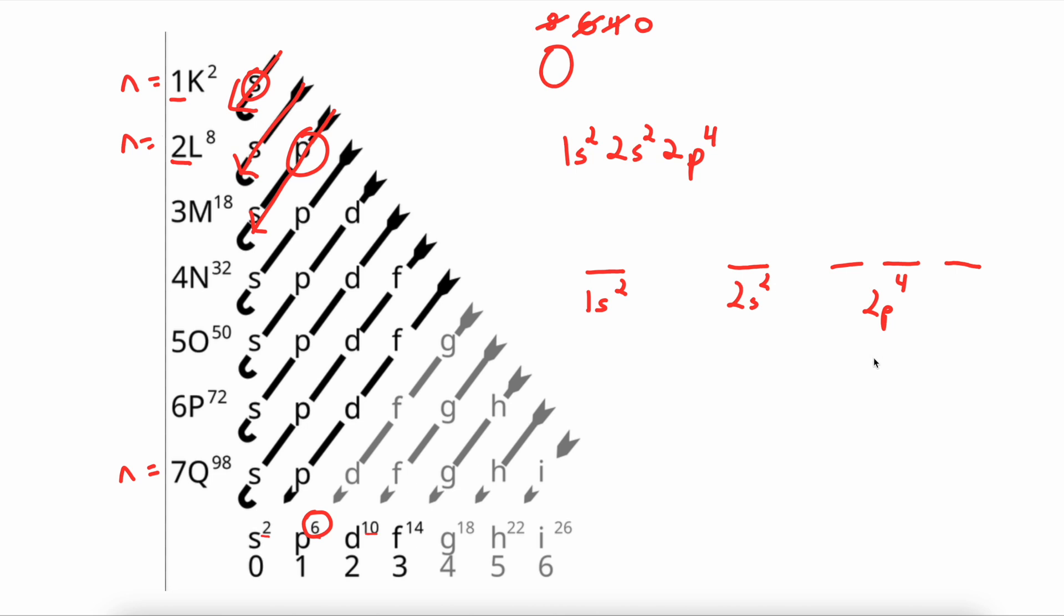Hund's rule states that electrons want to be by themselves before doubling up. This means that when we get to the P sublevel, we need to fill in each one of these blank orbitals with a single electron before we can start doubling up.